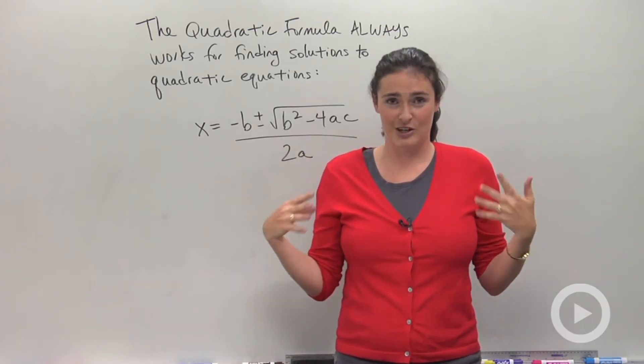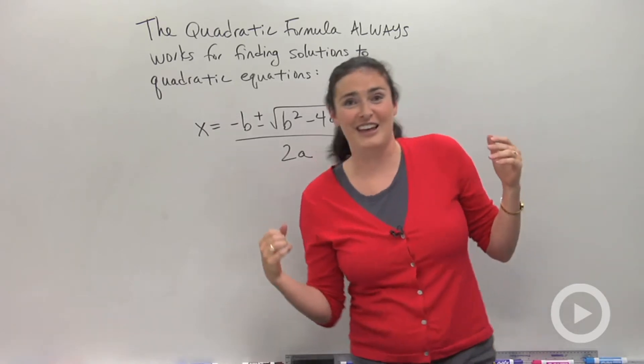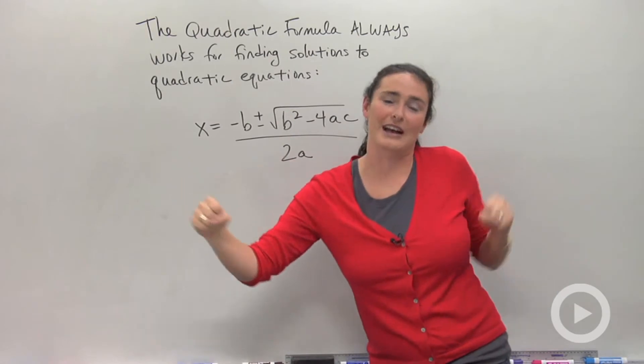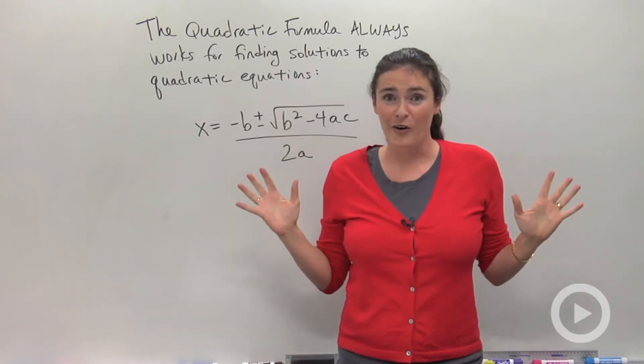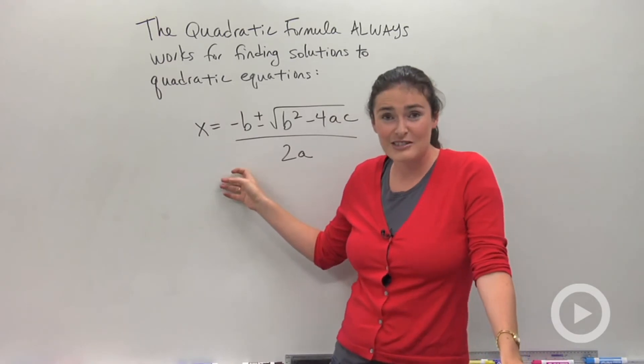I'm going to do it one more time just so you guys are annoyed and it starts going through your head. Here we go. X equals negative b plus or minus square root of b squared minus 4ac all over 2a. Okay. Yeah. So that's pretty good. You'll be singing that in your sleep.